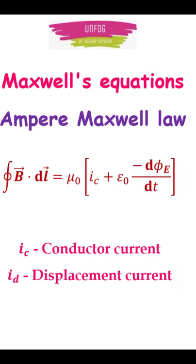And last is the Ampere Maxwell's law, stating that change in electric field creates a magnetic field. And here minus d phi_E by dt is the displacement current i_d.